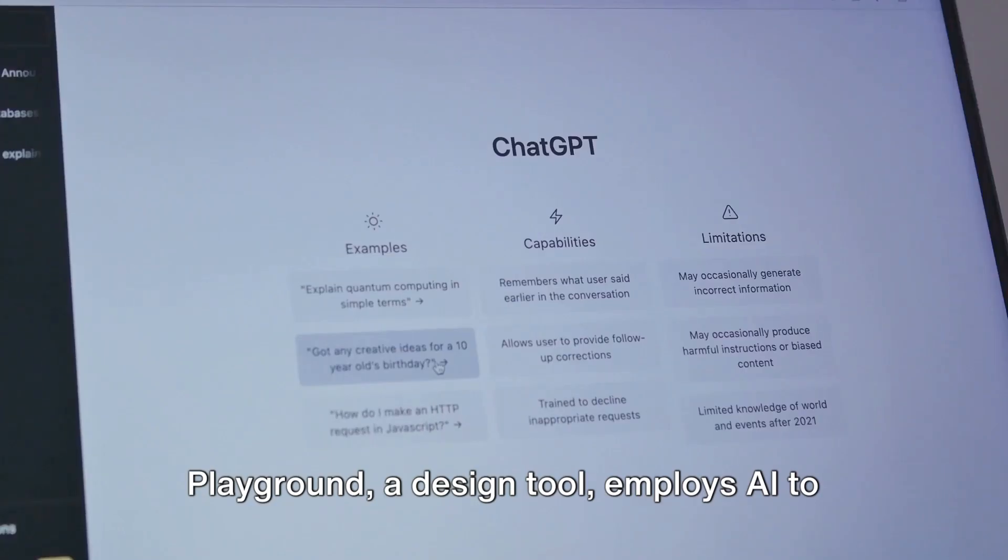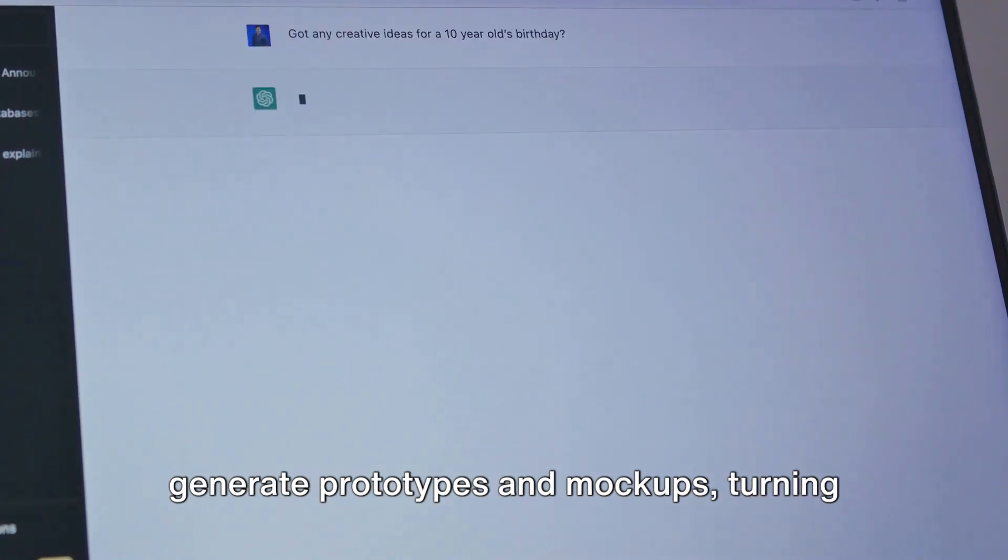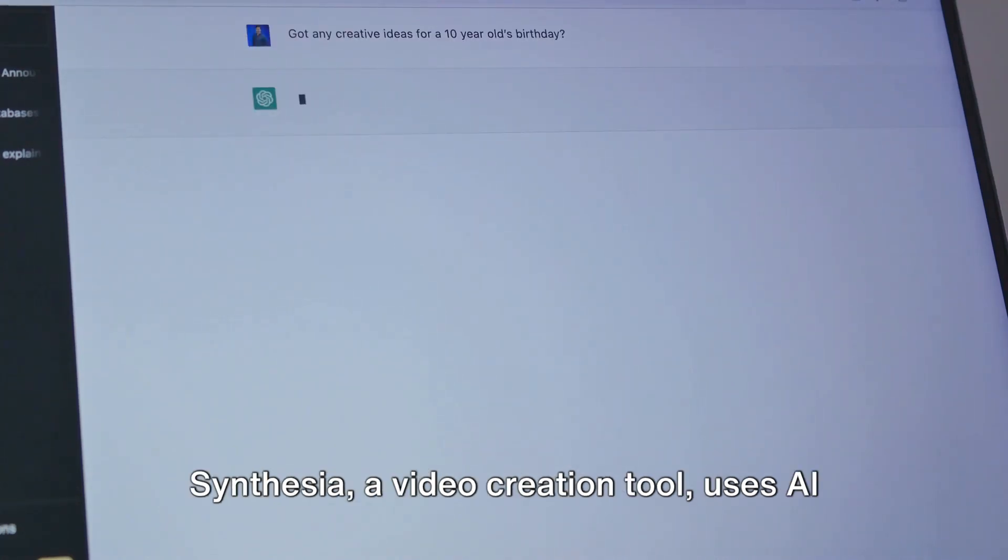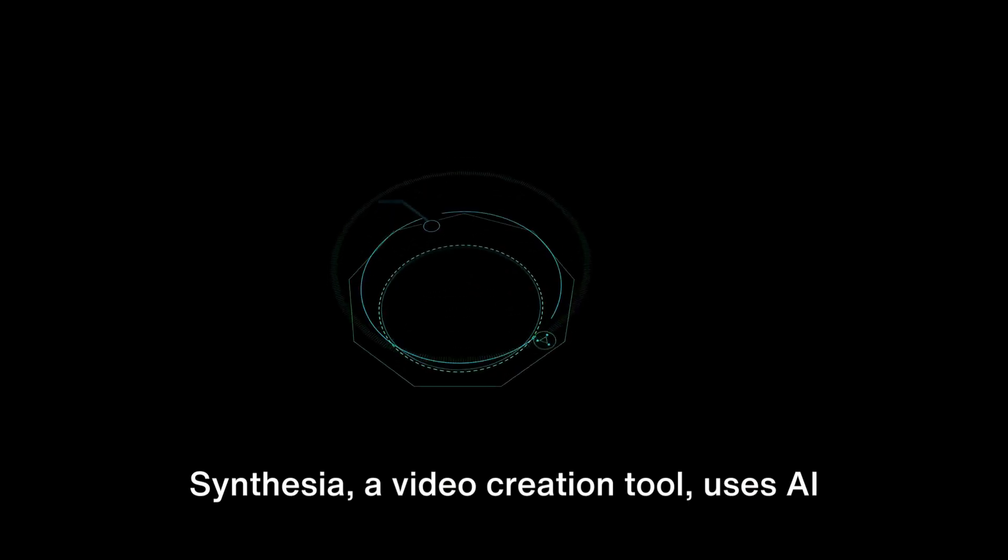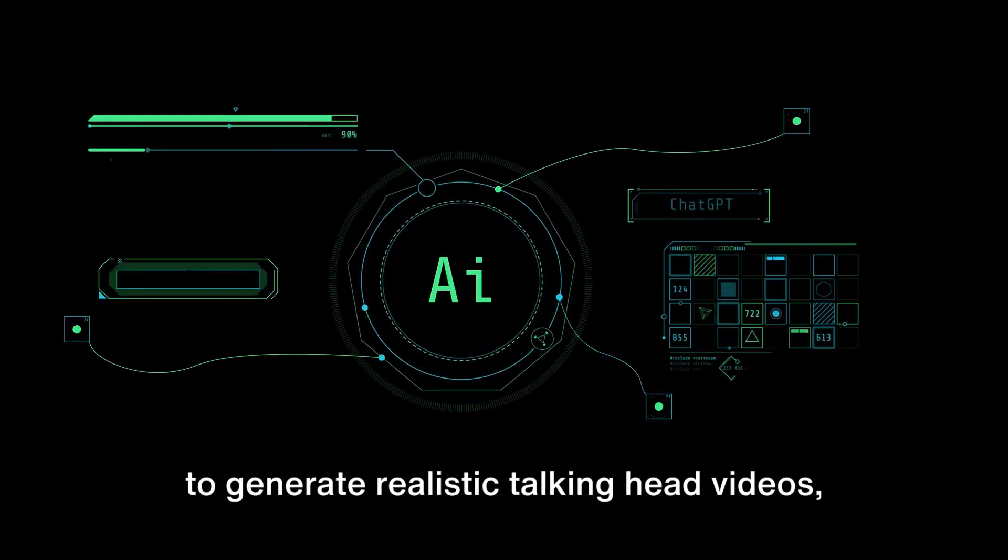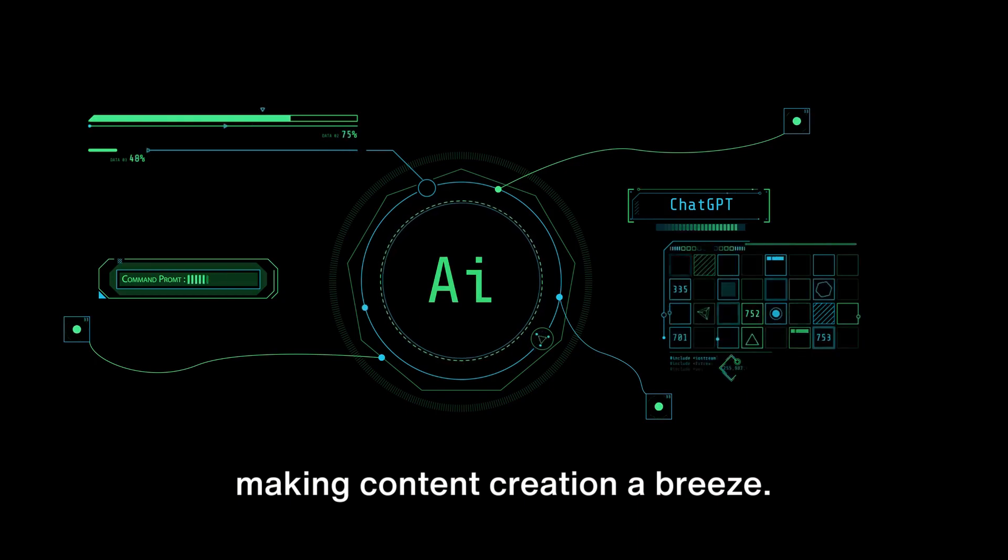Playground, a design tool, employs AI to generate prototypes and mockups, turning your ideas into tangible designs. Synthesia, a video creation tool, uses AI to generate realistic talking head videos, making content creation a breeze.